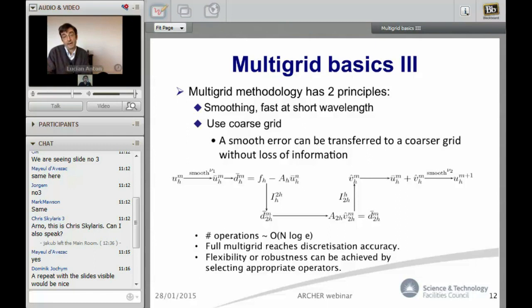Prolongate back the error, add it to the guess on the fine grid, and eventually do a couple of smooths. Now how you're going to solve on the coarse grid - it's relatively simple. If the grid is still large you can do again this thing.